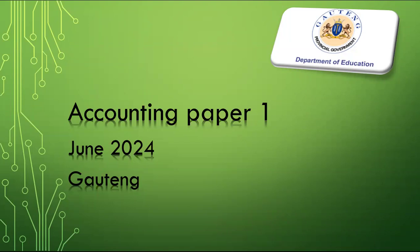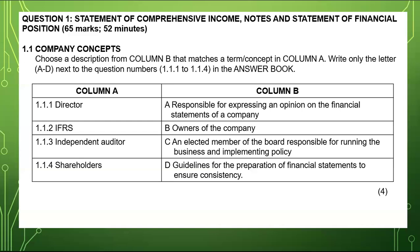Let us do accounting paper one — it is for this year from the junior exam from Gauteng. We are required to complete the statement of comprehensive income, or income statement, and the notes, as well as the statement of financial position. This is worth 65 marks and needs to be completed in 52 minutes.